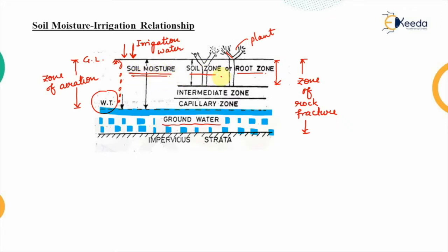This region is also known as the soil moisture region. Out of the soil moisture region, the first region is the zone occupied by the roots of the plant, known as the soil zone or root zone. In the rest of the portion, water rises due to capillary action of voids in the soil — this is the capillary zone. The region between the root zone and the capillary zone is known as the intermediate zone. The zone studied for irrigation purposes belongs to the soil zone or root zone.